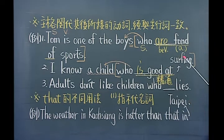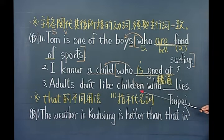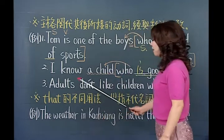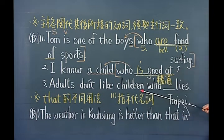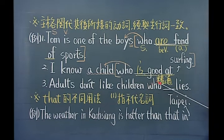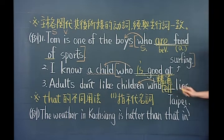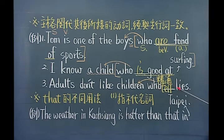介词后面碰到动词一定要改成V-ing，所以是be good at surfing。I know a child who is good at surfing——我认识一个很会冲浪的小朋友。第三句：Adults don't like children，大人不喜欢小朋友，什么样的小朋友？后面补充说明who lies，说谎叫做tell lies。who在这里是主格关带，指的是前面的children，是复数，所以tell不需要加s。大人不喜欢说谎的小朋友。